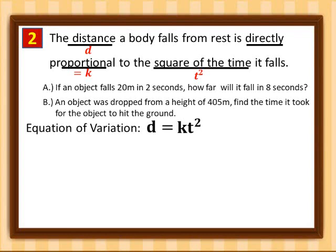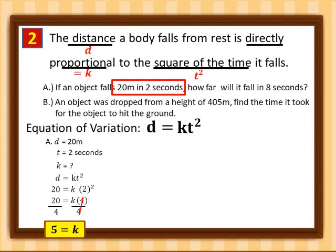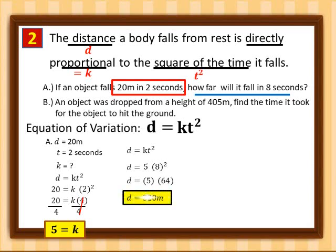For part a, the given values are distance equals 20 meters and time equals 2 seconds. Substituting into d equals k t squared: 20 equals k times 2 squared, so 20 equals 4k. Dividing both sides by 4, k equals 5. Now using d equals 5 t squared with t equal to 8 seconds: d equals 5 times 64, which is 320 meters.